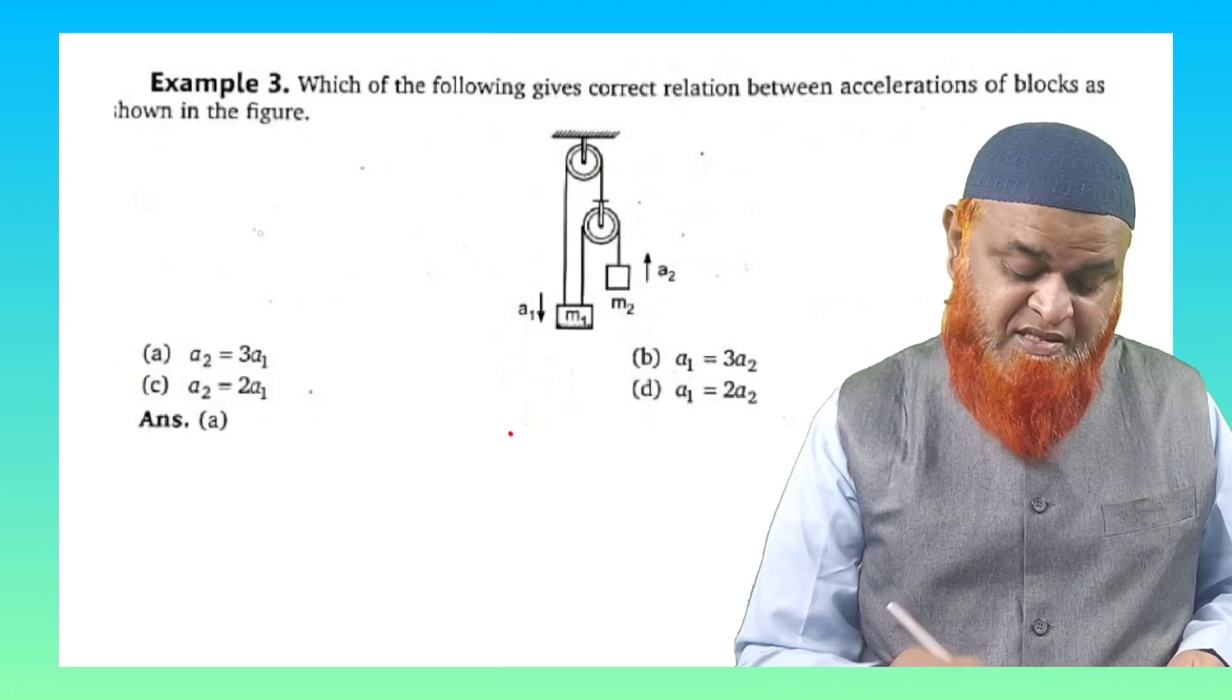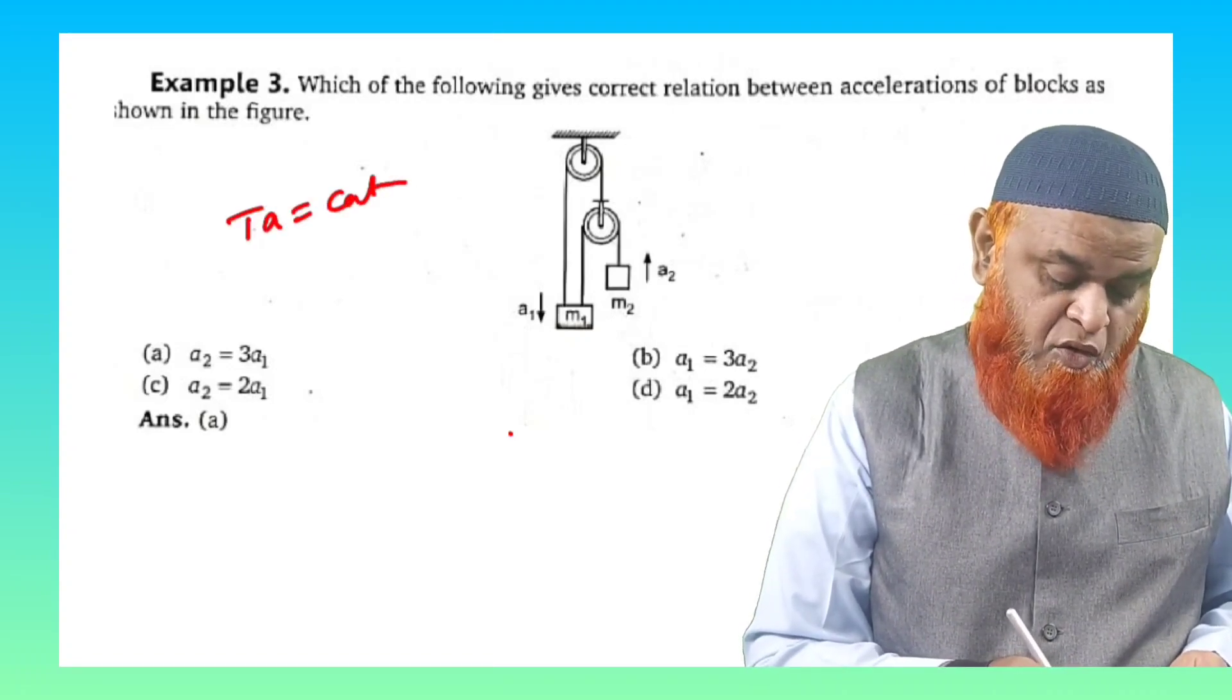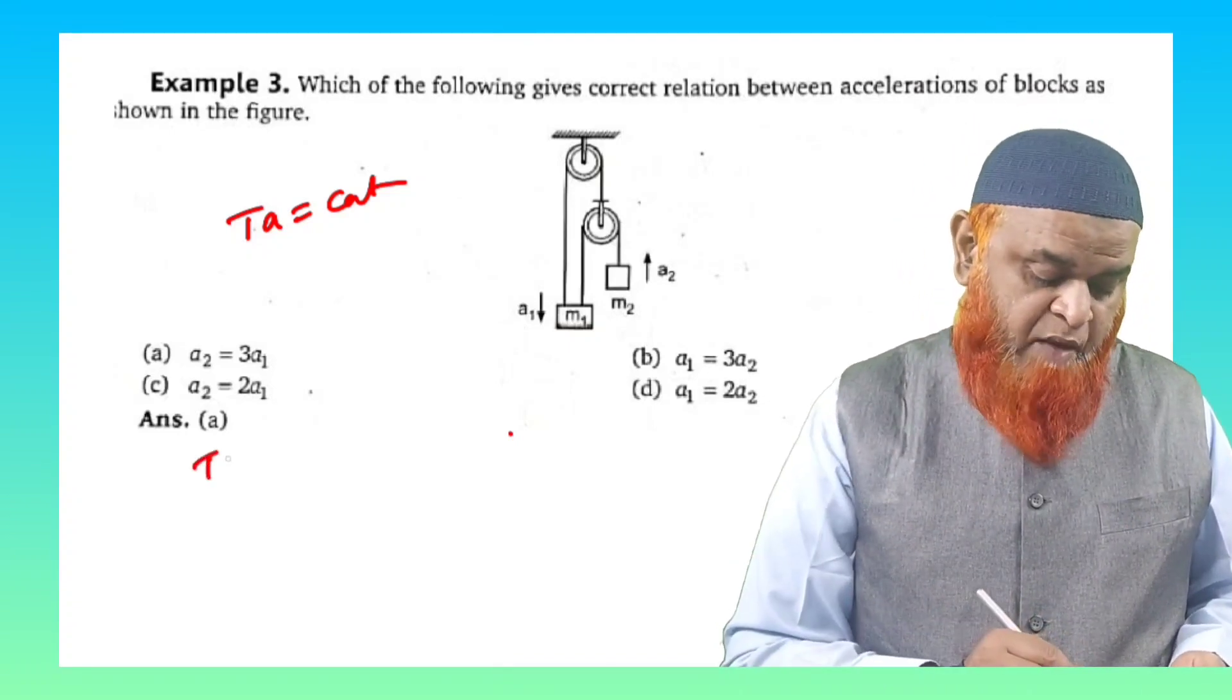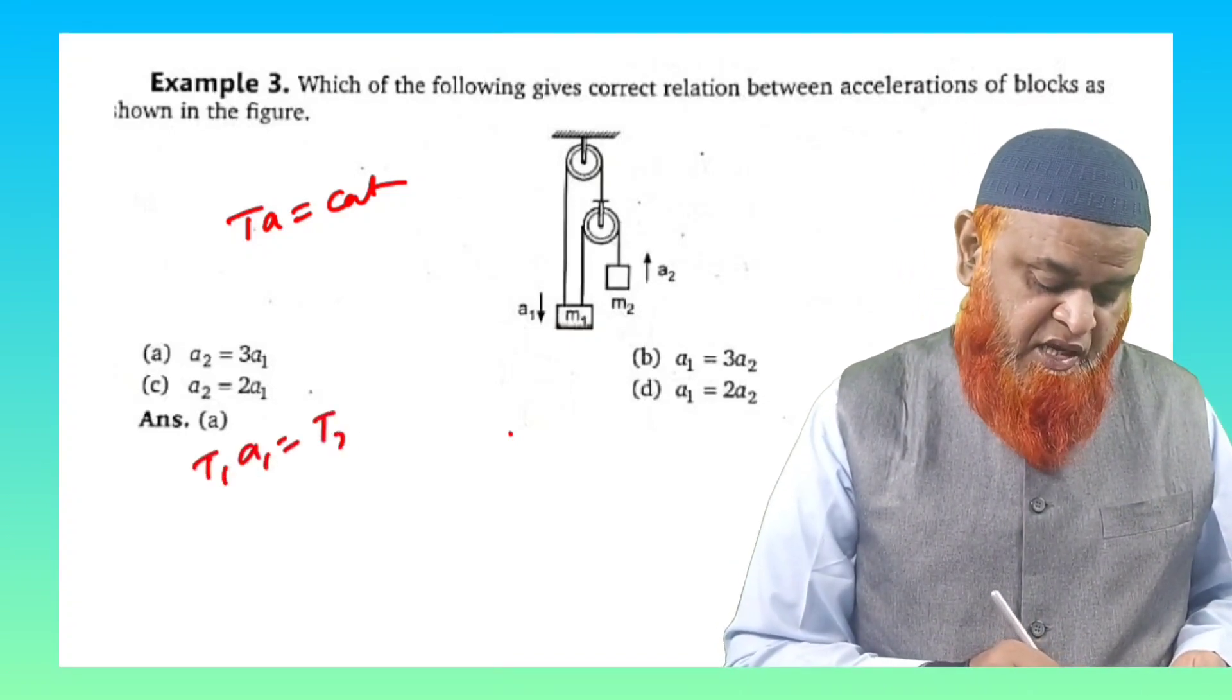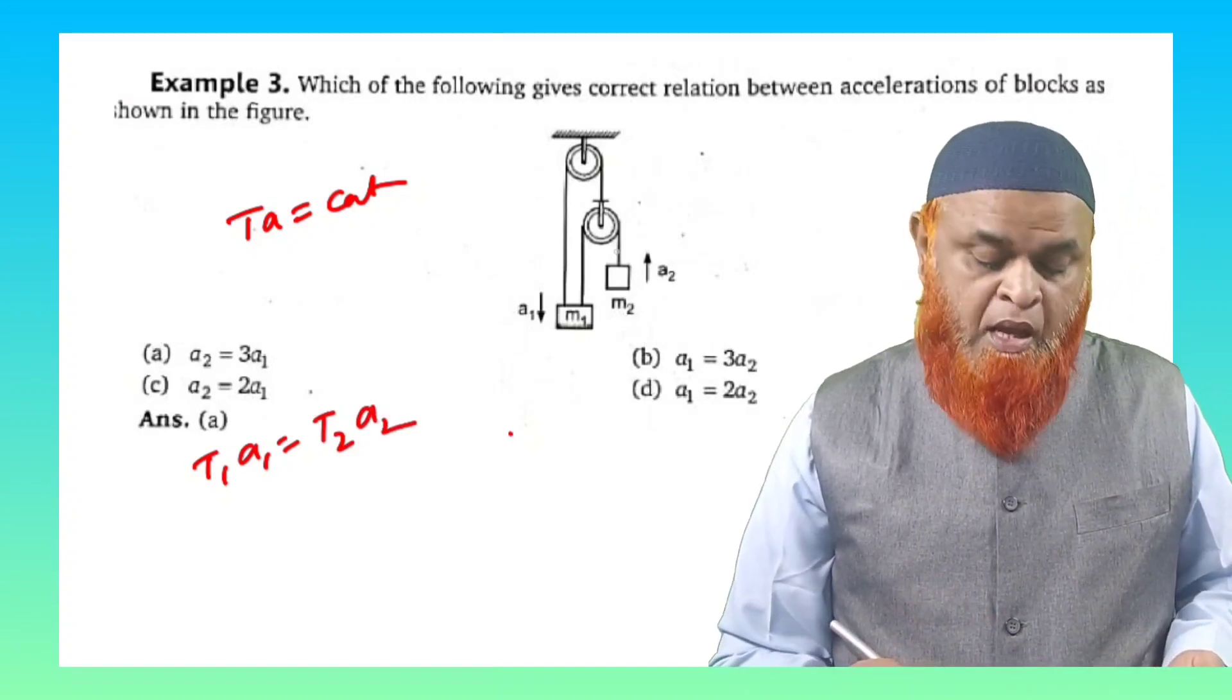you can take here TA is equal to constant. Tension into acceleration is going to be constant here, and with this it is clear that T₁A₁ is equal to T₂A₂. And what is the tension at this place? Let us see, this is tension T, okay.